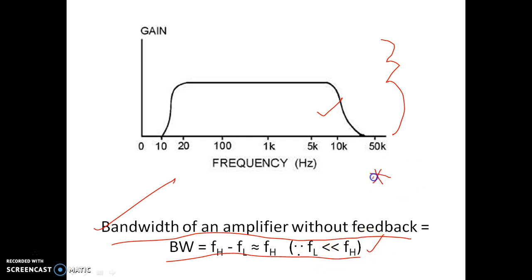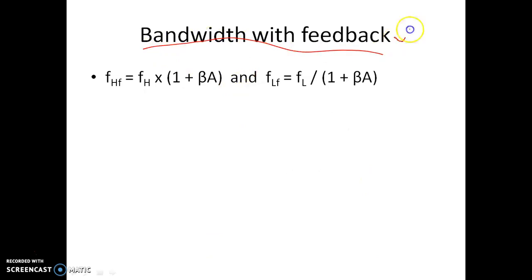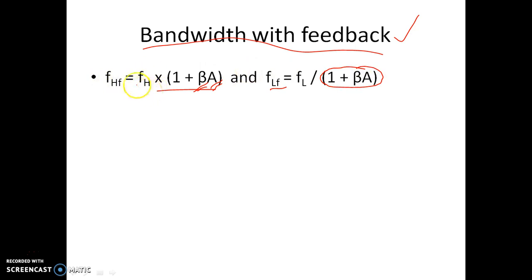For a general amplifier, the bandwidth is approximately equal to the higher cut-off frequency. Now, bandwidth with negative feedback — the higher cut-off frequency increases by a factor (1 + βA), where A is the gain without feedback and β is the feedback gain. The lower cut-off frequency is decreased by a factor (1 + βA). So the new higher cut-off frequency is FHF = FH × (1 + βA), and the lower cut-off frequency with feedback is FLF = FL / (1 + βA).